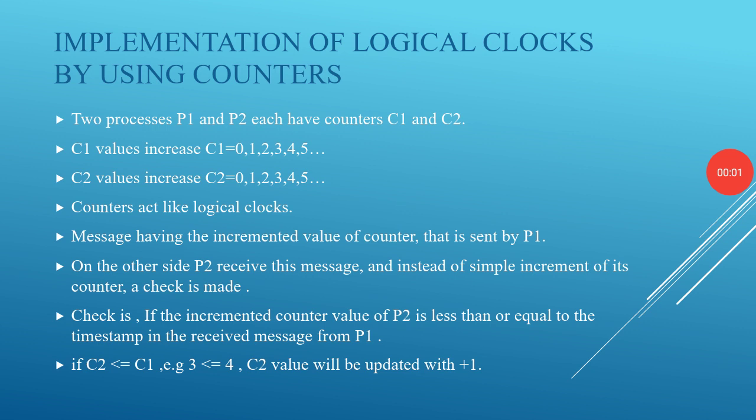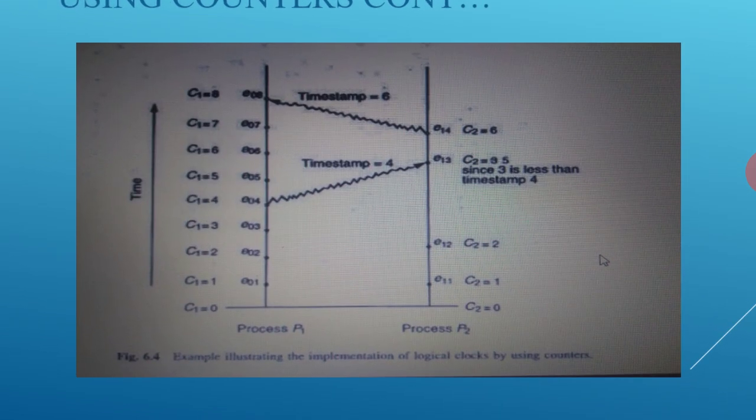Implementation of logical clocks using counters: two processes P1 and P2 each have counters C1 and C2 which act like logical clocks. A message having the incremented counter value is sent by P1. On the other side, P2 receives this message and instead of a simple increment, a check is made: if the incremented counter value of P2 is less than or equal to the timestamp in the received message from P1 — for example, if C2 ≤ C1 (e.g., 3 ≤ 4) — then C2 is updated with plus one. Here is an example; pause the video to see it.